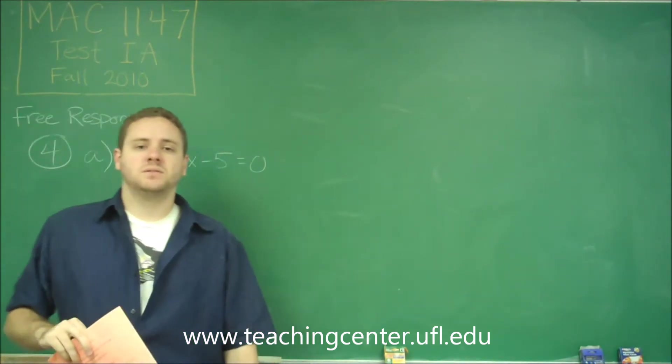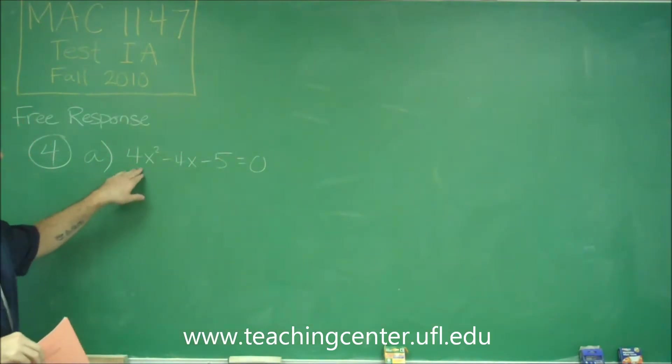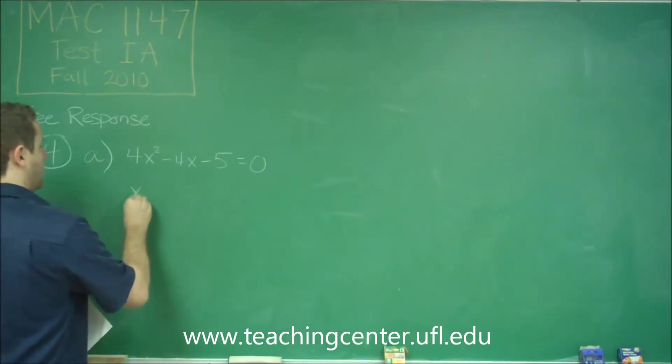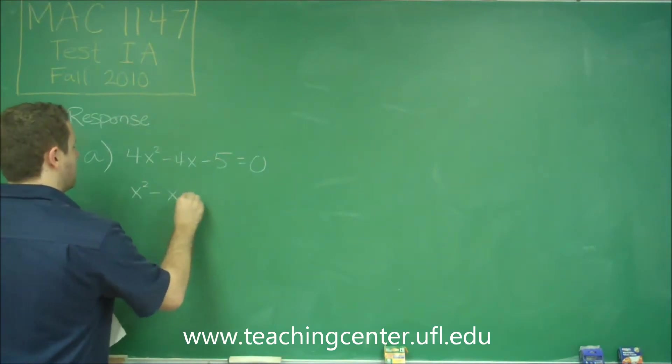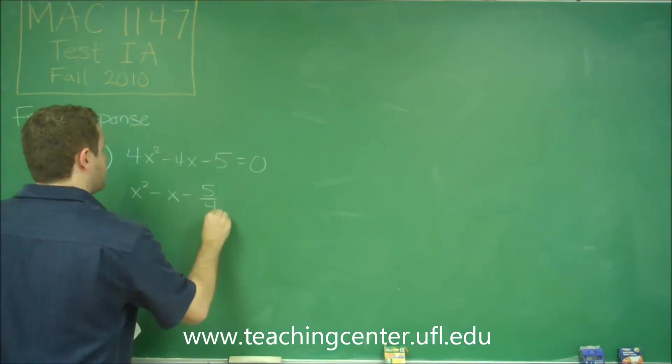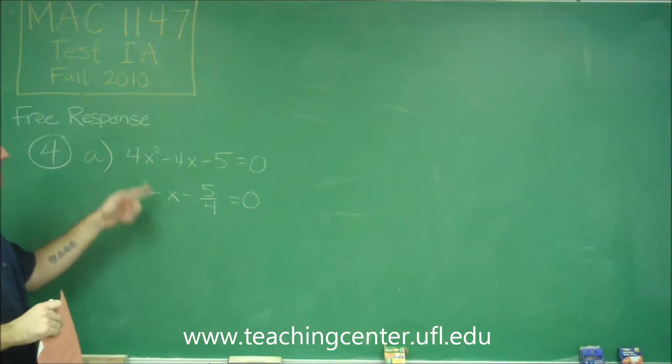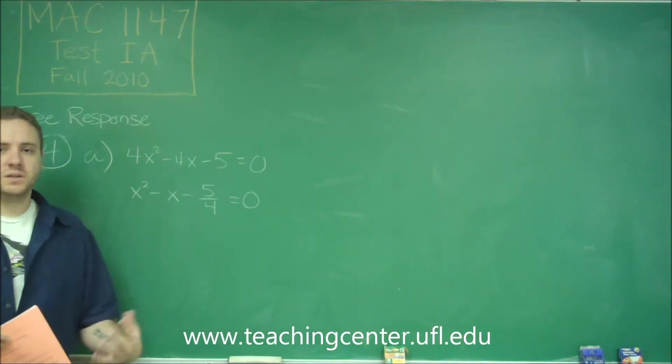Remember that in order to complete the square, your coefficient on your x² term needs to be 1, so we have to divide this whole thing by 4. We'll get x² - x - 5/4 = 0. This is the exact same thing as this, 0 divided by 4 is 0.